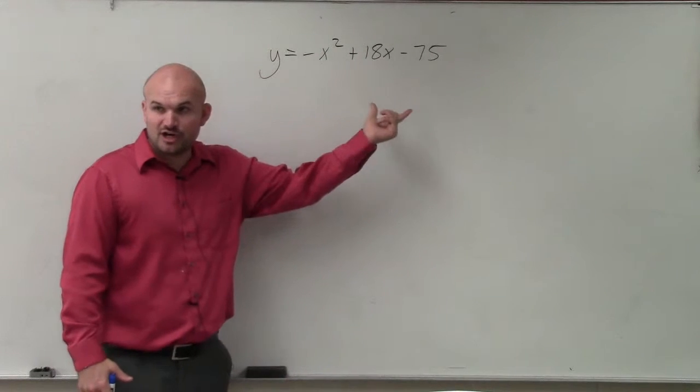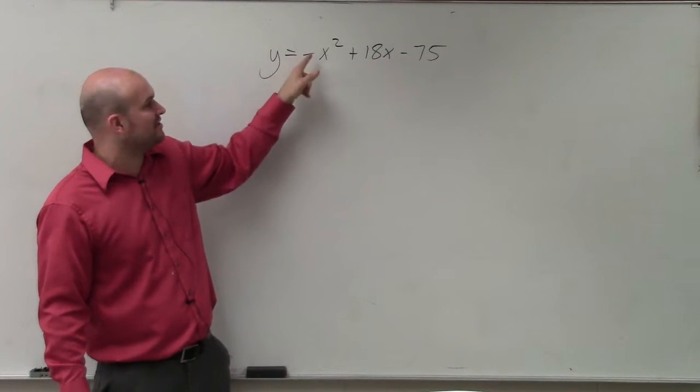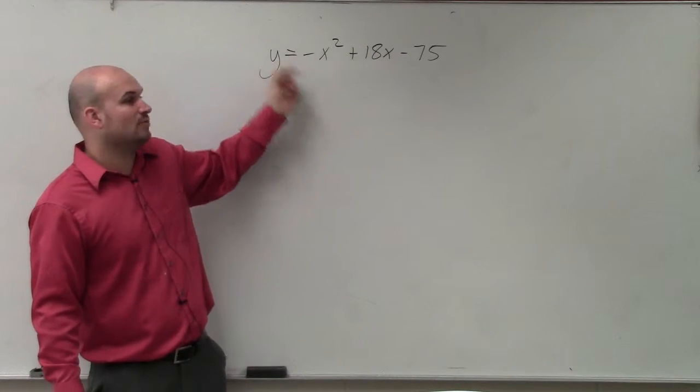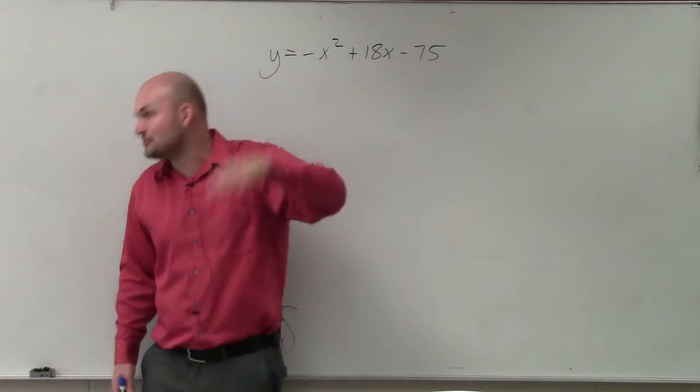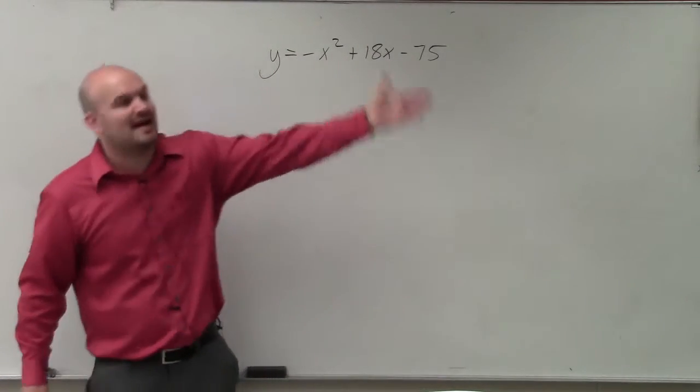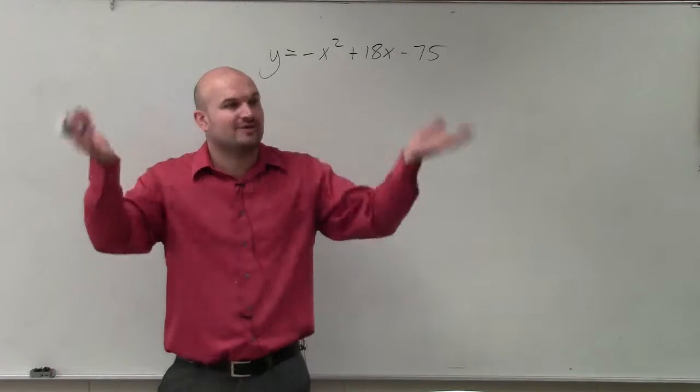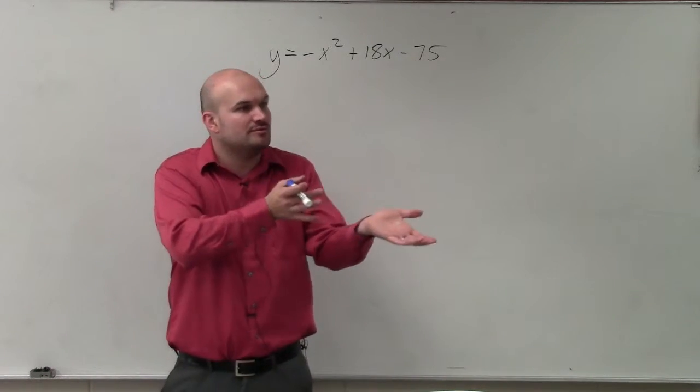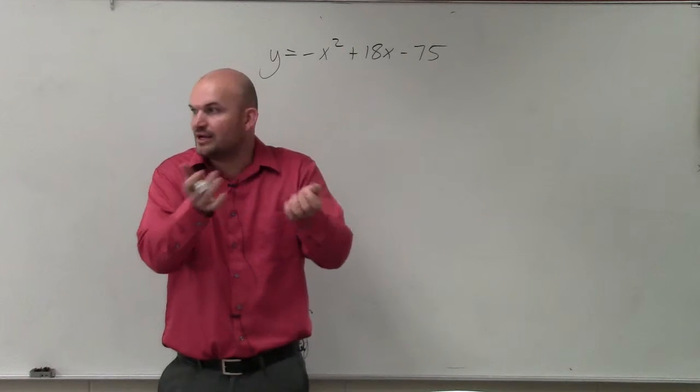You group the first two terms, factor out your constant, so therefore negative, so therefore a is 1. Then you do your b divided by 2 squared. You add it inside the parentheses, subtract it outside the parentheses, factor it, and then you got it in vertex form, and then you know what the vertex is, right? Does everybody kind of remember that?